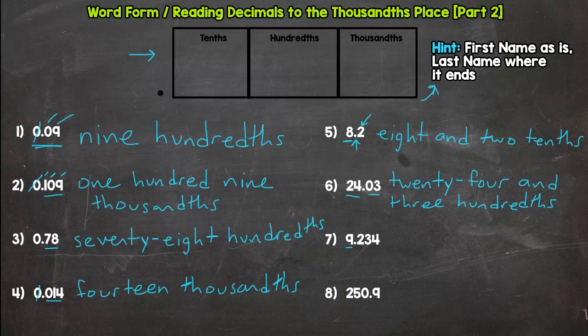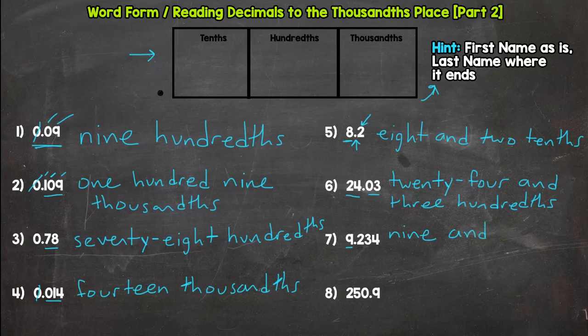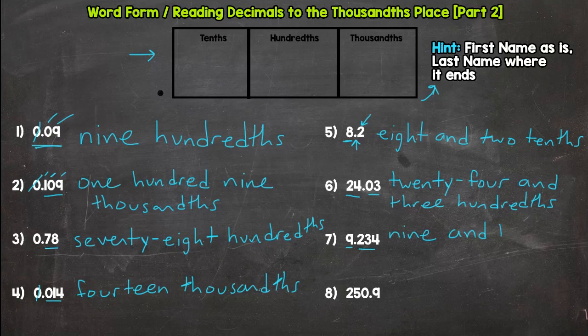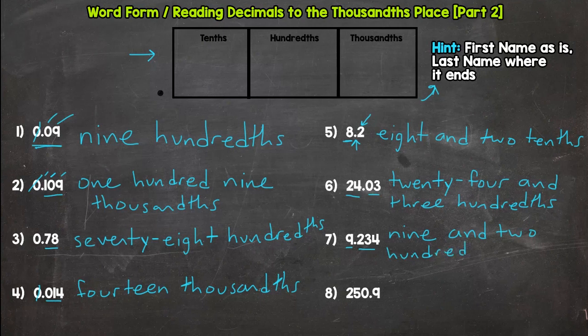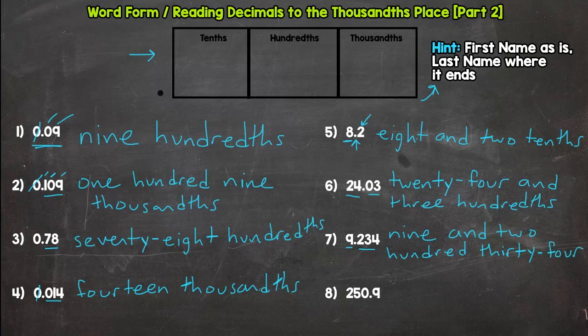All right. Next. Whole number. Nine. Decimal. And. Read as is here. Two. Hundred. Thirty. Four. This is a long one. And it ends in the thousandths.